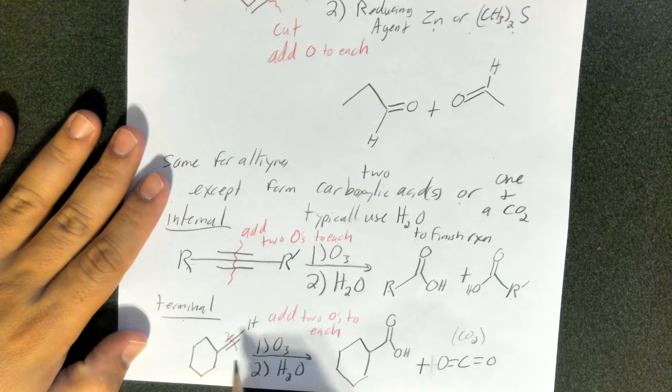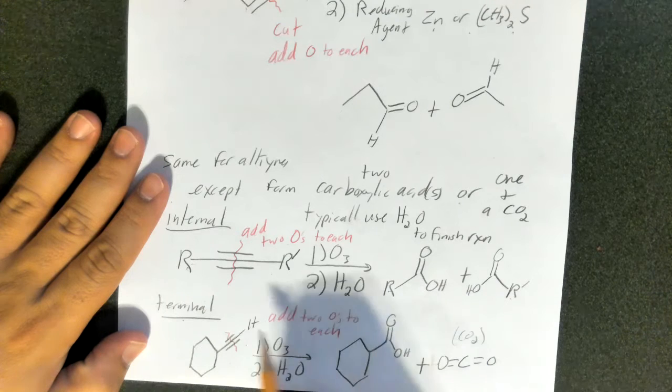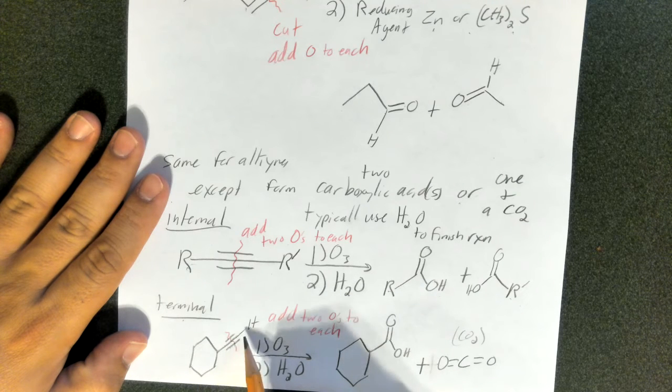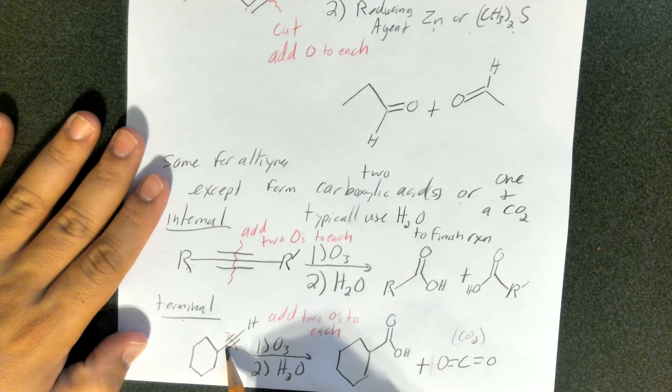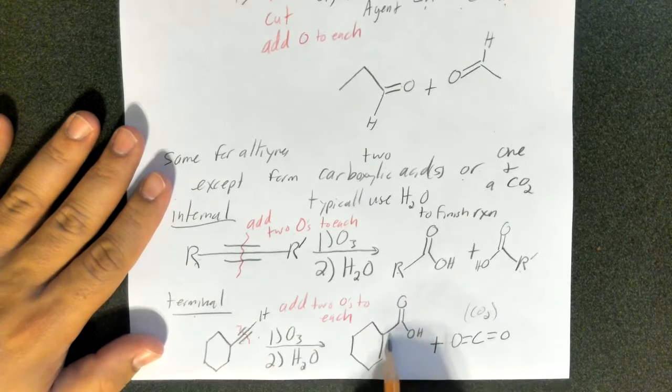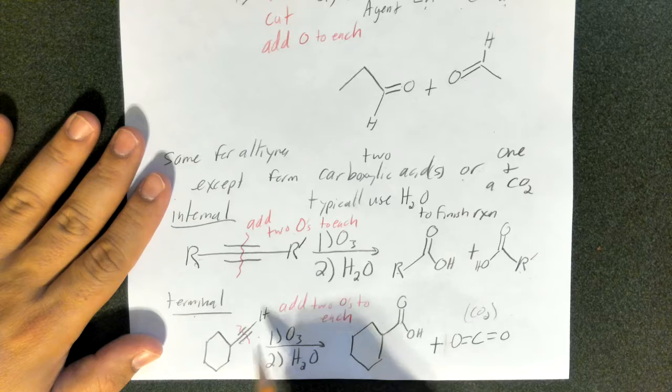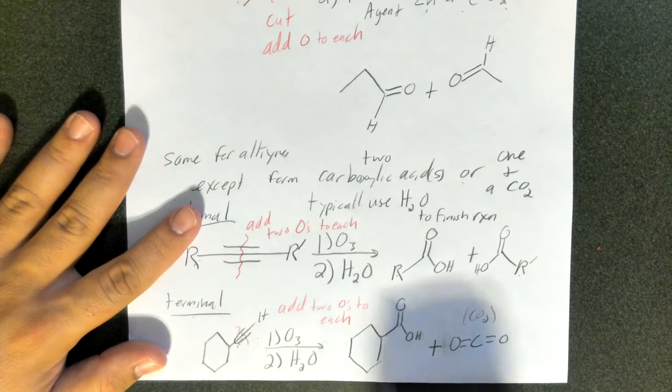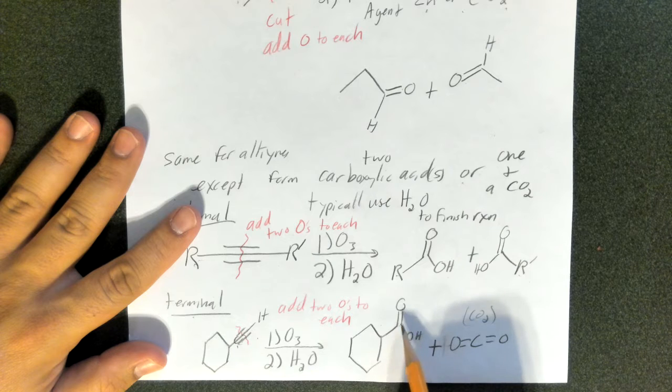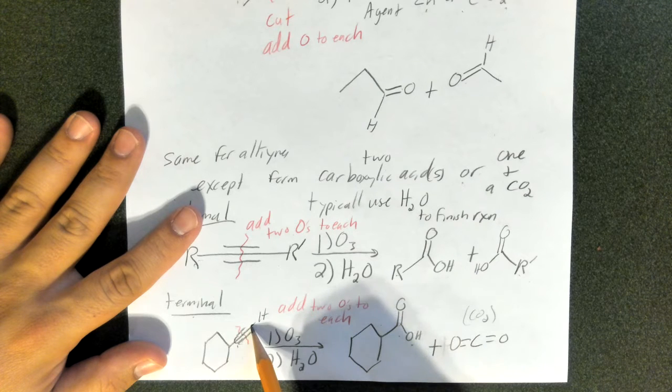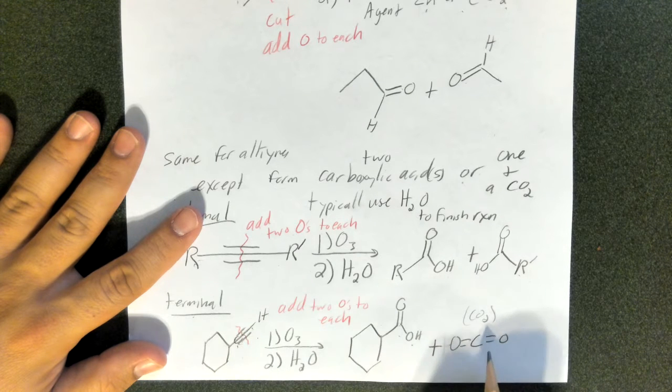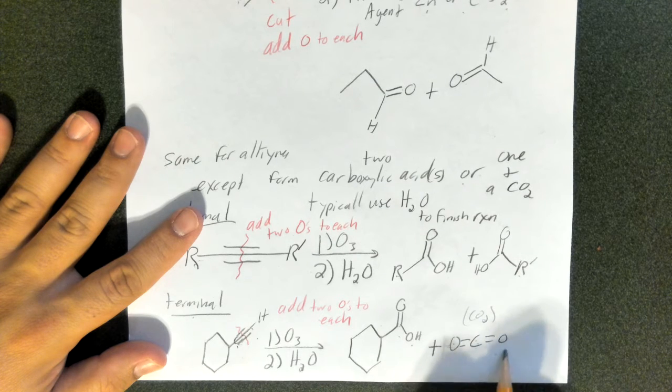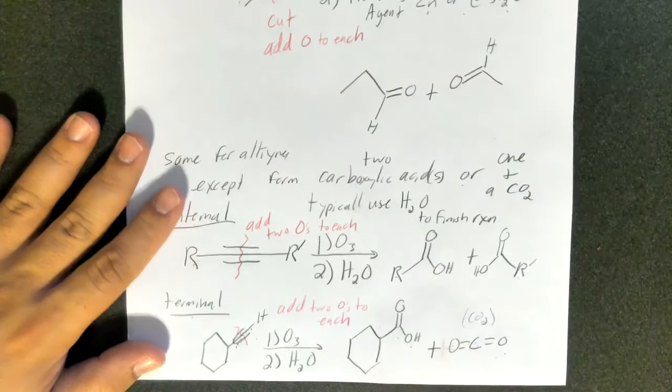For terminal alkynes, you essentially get the same thing for the side that has an R group on it. Here, you take a cyclohexane that's connected to an alkyne. You end up with that same cyclohexane, but that carbon right here, this carbon right here, it ends up as a carboxylic acid, but this carbon right here ends up as CO2. So it ends up as C double bond O, C double bond O, which is CO2, carbon dioxide.